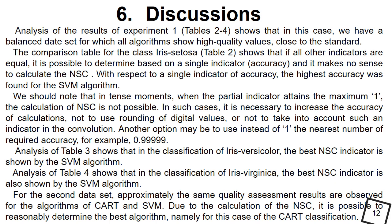The comparison table for the class Iris-Setosa (Table 2) shows that if all other indicators are equal, it is possible to determine based on a single indicator accuracy, and it makes no sense to calculate the NSC.